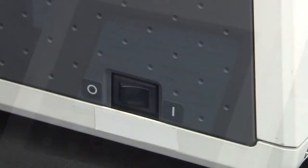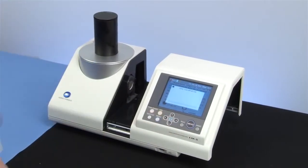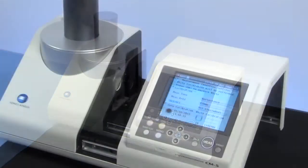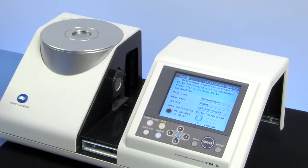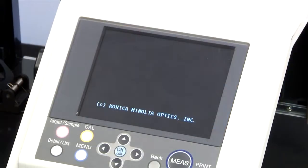To begin, just switch the instrument on, perform zero calibration, and then white calibration before each color measurement session. There is also an option to perform white calibration automatically.